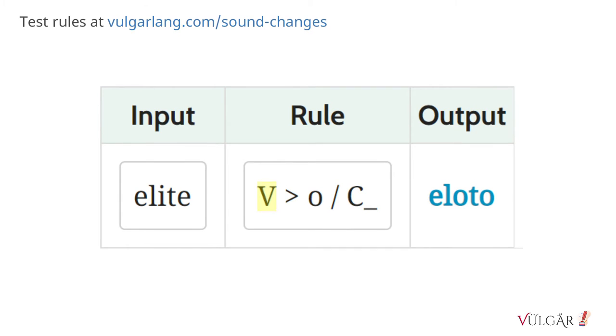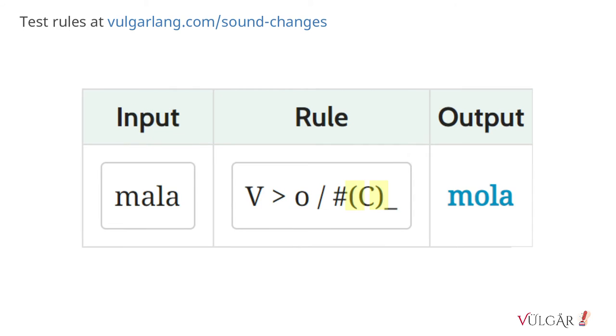Uppercase V and C represent any vowel and any consonant respectively. This rule changes any vowel to O after a consonant. Round brackets represent something optional. This rule changes the vowel at the beginning of the word, but it can optionally start with a single consonant.